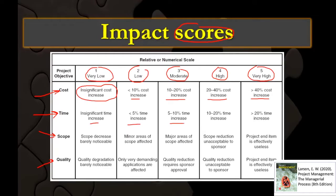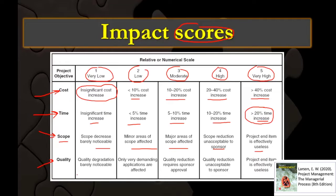The same thing applies to duration. If there's no major time change, but if you change more than 5% of the time, it's a low impact. But if you increase the activity time by more than 20%, that's a very high impact. Of course, here we're talking about things that impact the project — so we have to look at activities in the critical path, not outside of the scope. For scope and quality, the idea is the same: two types of score moving from low to high.